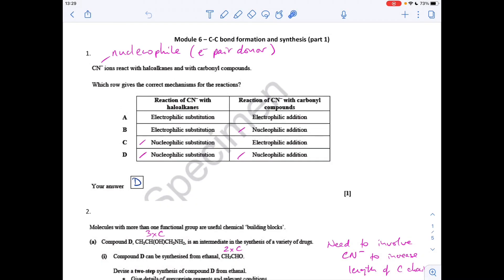The first question is a multiple choice question. We're told that cyanide ions react with haloalkanes and with carbonyl compounds. Which rule gives the correct mechanism? The key to this is the cyanide ions are nucleophiles, so the reaction's got to have nucleophilic in. So you can see I've ticked those, and the only rule with both ticked is D.